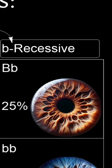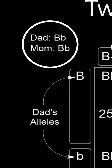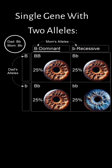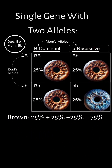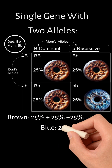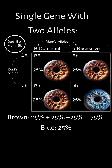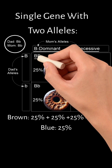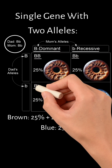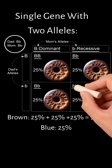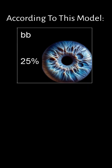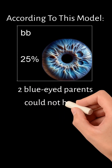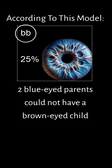In the simple monohybrid cross, where both parents are heterozygous, carrying one dominant and one recessive allele, the offspring have a 75% chance of exhibiting the dominant brown eyes and a 25% chance of showcasing the recessive blue eyes. This is because the possible genetic combinations are BB at 25%, Bb at 50%, and bb at 25%. According to this model, two blue-eyed parents could not have a brown-eyed child because they would only pass on the blue-eyed allele.